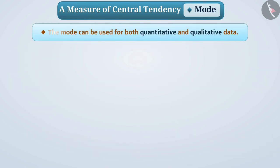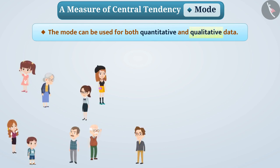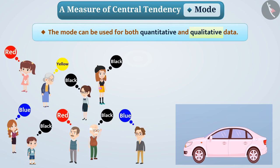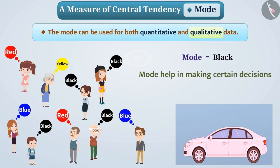The mode can be used for both quantitative and qualitative data. Let's look at an example of qualitative data. Suppose a family wants to buy a car. The opinions of the family members regarding the color of the car are given, and their mode is black. So with the help of mode, it helps in making decisions related to the color of the car.